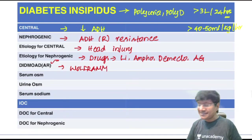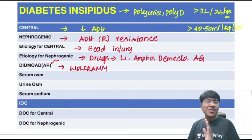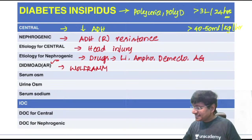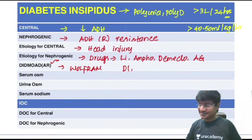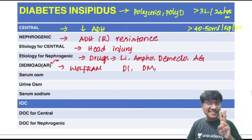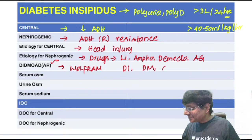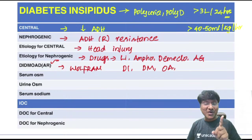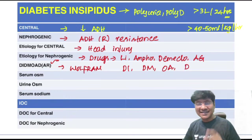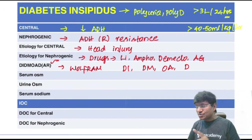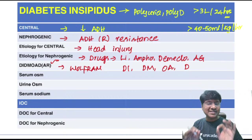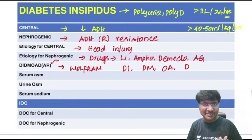DIDMOAD syndrome has autosomal recessive inheritance. The components are: DI = diabetes insipidus, DM = diabetes mellitus, OA = optic atrophy, and D = deafness. This syndrome, also called Wolfram syndrome, causes nephrogenic diabetes insipidus.